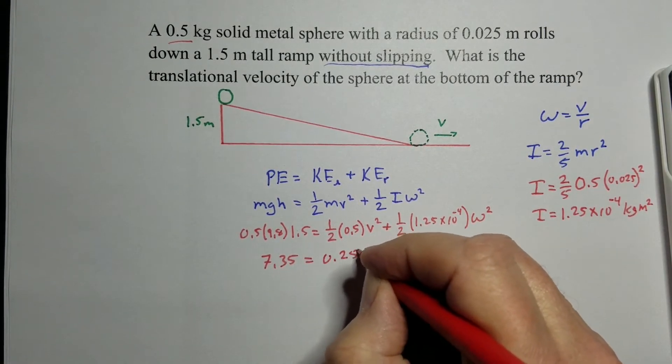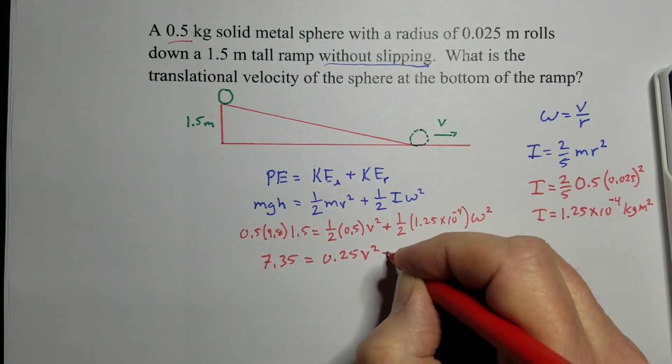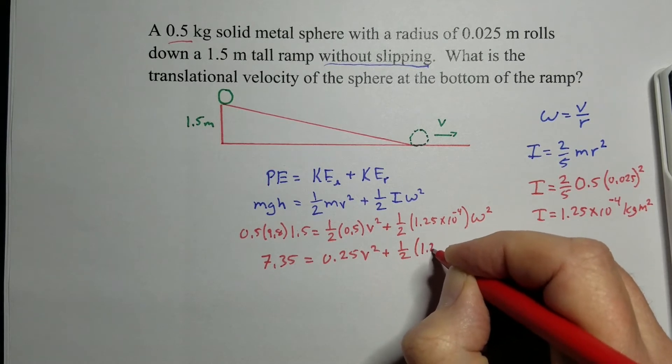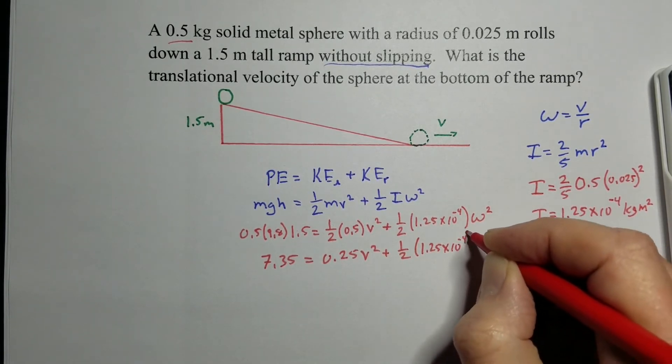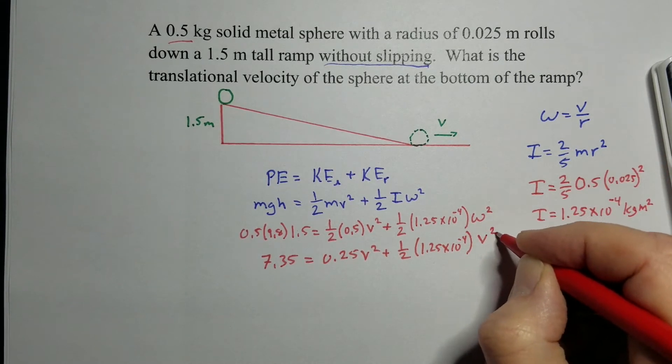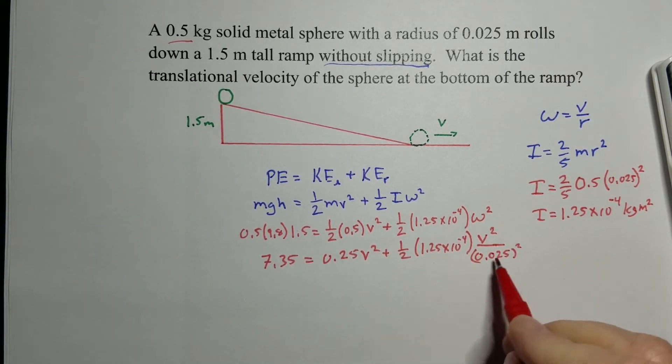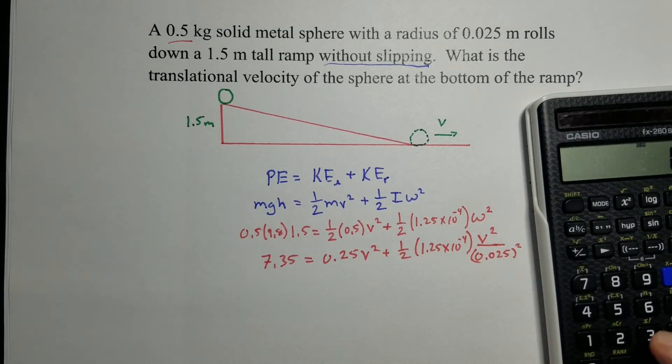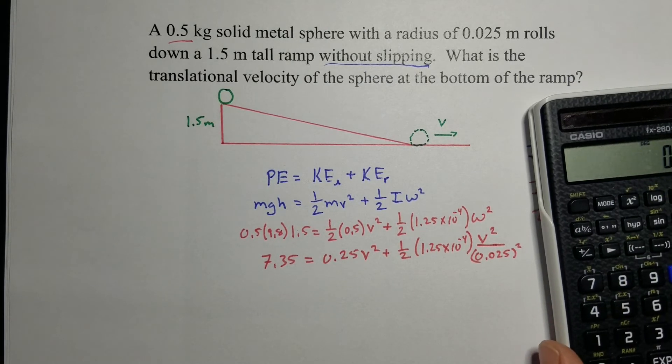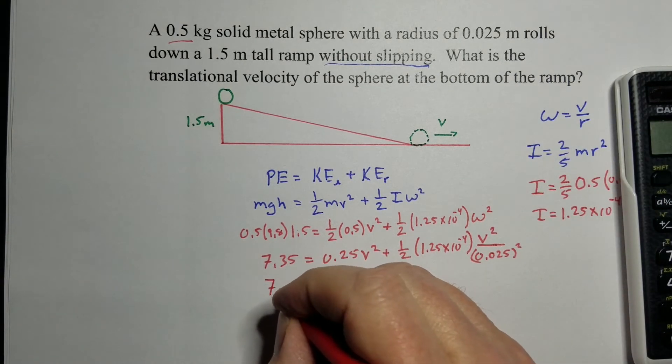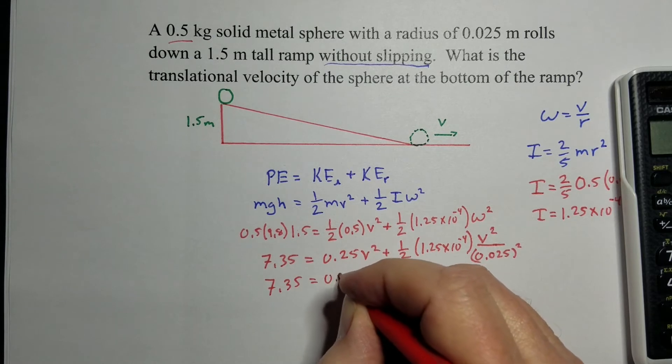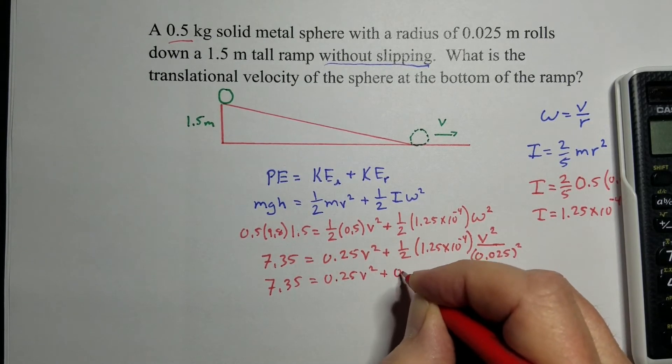So 0.25, half of 0.5 is that, v squared plus one-half of this, 1.25 times 10 to the minus 4th. Now I want to substitute this in, so we get v squared over 0.025, which is the radius squared. Let's go ahead and calculate this number here. So we get 0.125 times 10 to the negative 4 divided by 2 divided by 0.025 squared gives me 0.1. They reduced to just 0.1. So 7.35 equals 0.25 v squared plus 0.1 v squared.